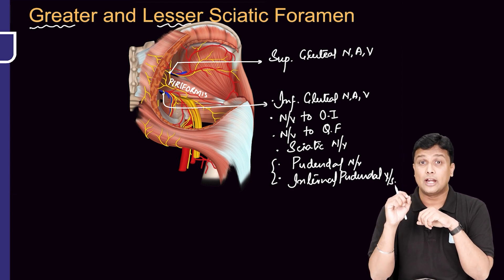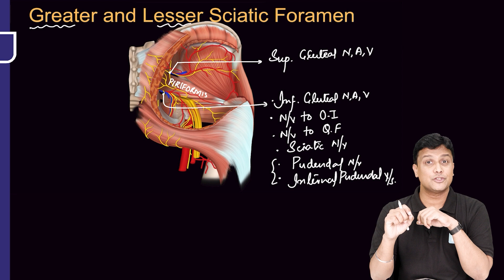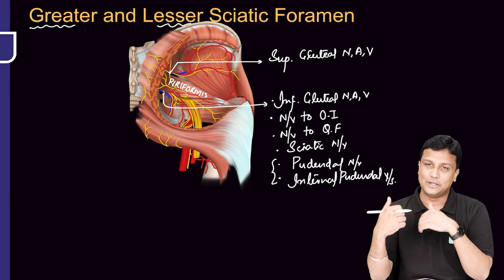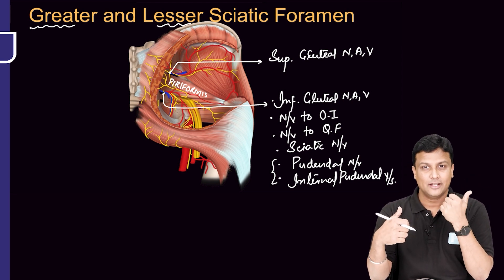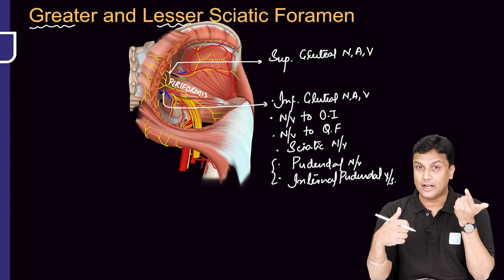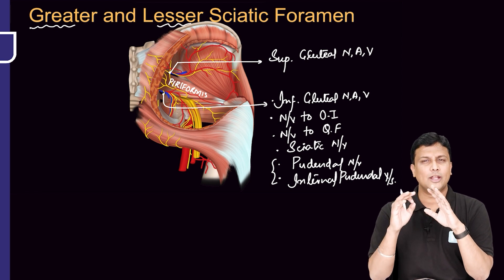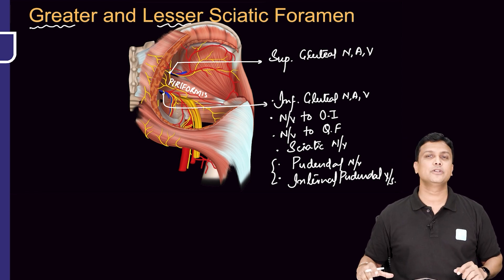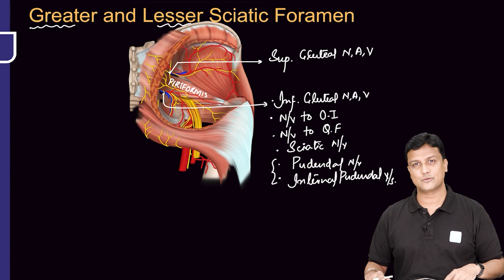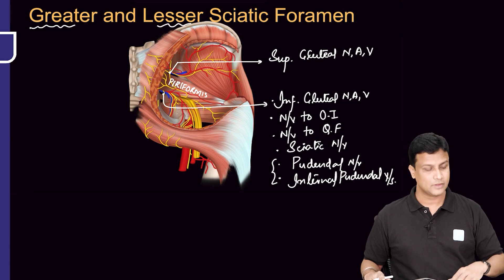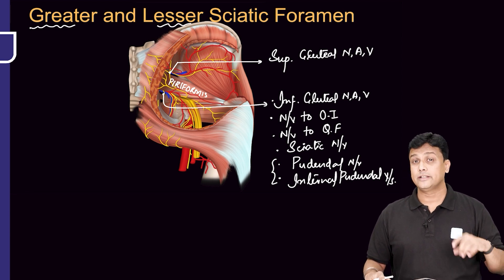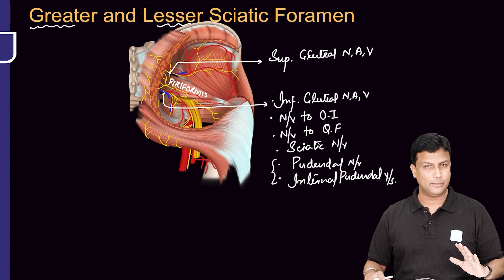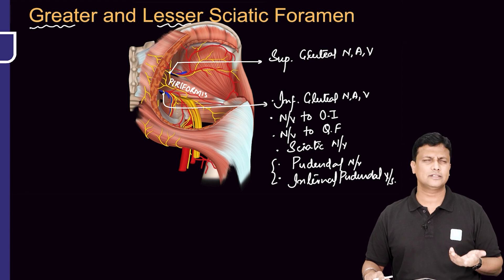From here itself we can remember what are the structures passing through the lesser sciatic foramen — of course it will be the pudendal nerve, internal pudendal artery and vein. The only one thing you have to add is that the tendon of the obturator internus muscle will also pass from the lesser sciatic foramen.